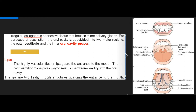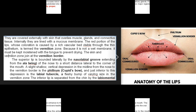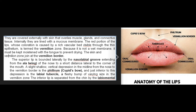For purposes of description, the oral cavity is subdivided into two major regions: the outer vestibule and the inner oral cavity proper. The highly vascular fleshy lips guard the entrance to the mouth. The red vermilion zone gives way to mucous membrane leading into the oral cavity. The lips are two fleshy mobile structures guarding the entrance to the mouth, covered externally with skin that overlies muscle, glands, and connective tissue.